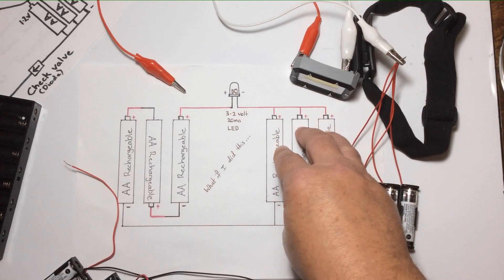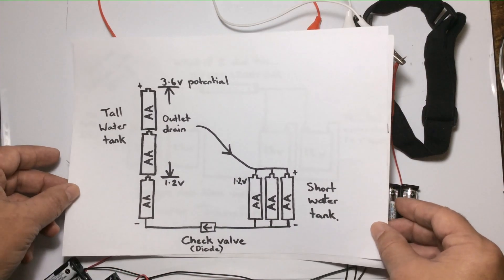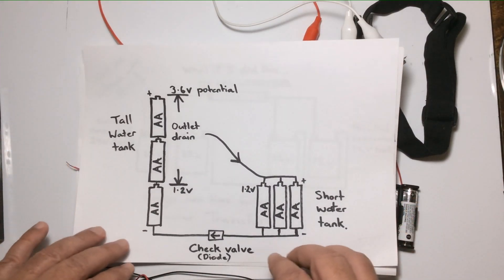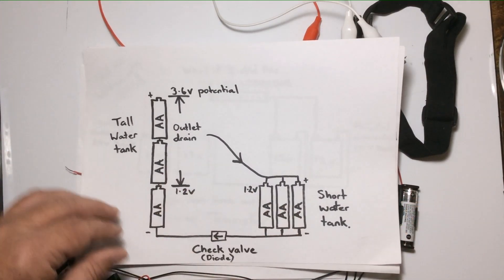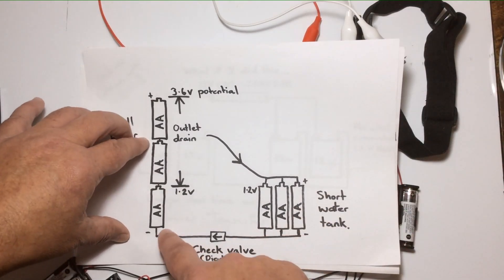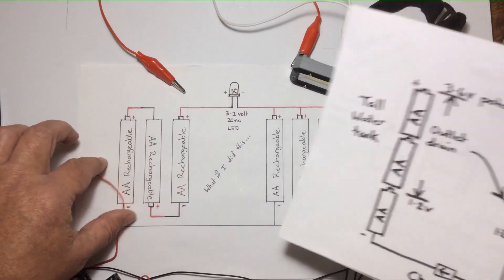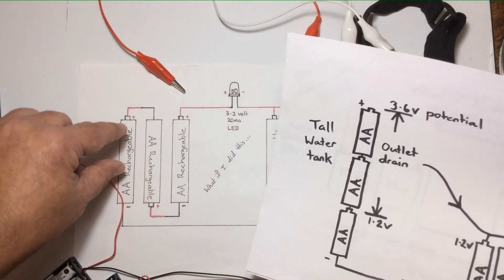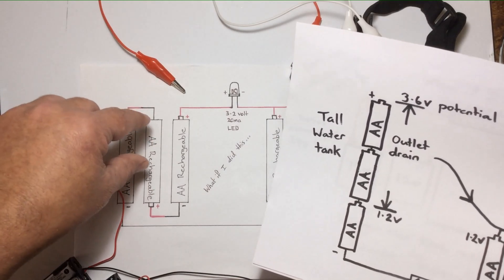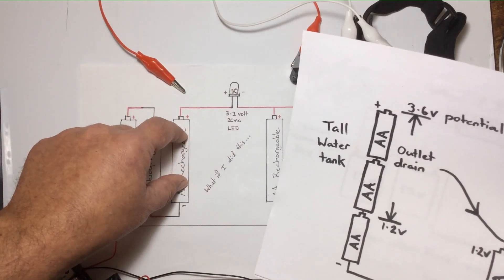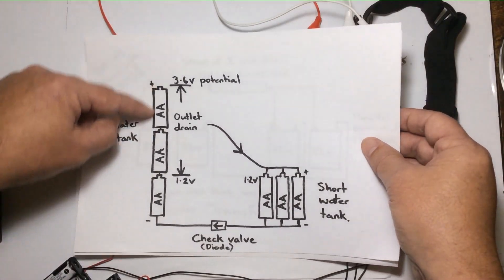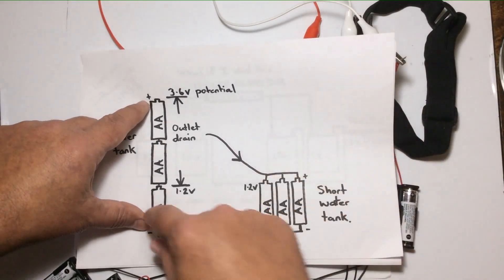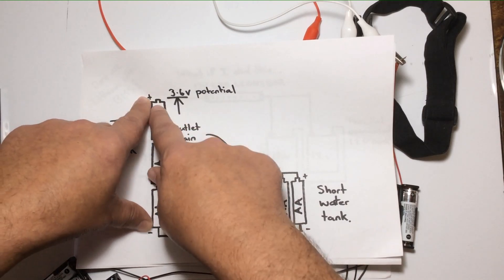There's an easy diagram to sort of help explain what's happening here. The three batteries on this side are connected in series, which accumulates their voltage. So we've got 1.2 volts, 2.4, 3.6 volts. That's basically what's happening there - they're connected in series creating 3.6 volts, which is a higher potential or higher voltage than these three batteries.